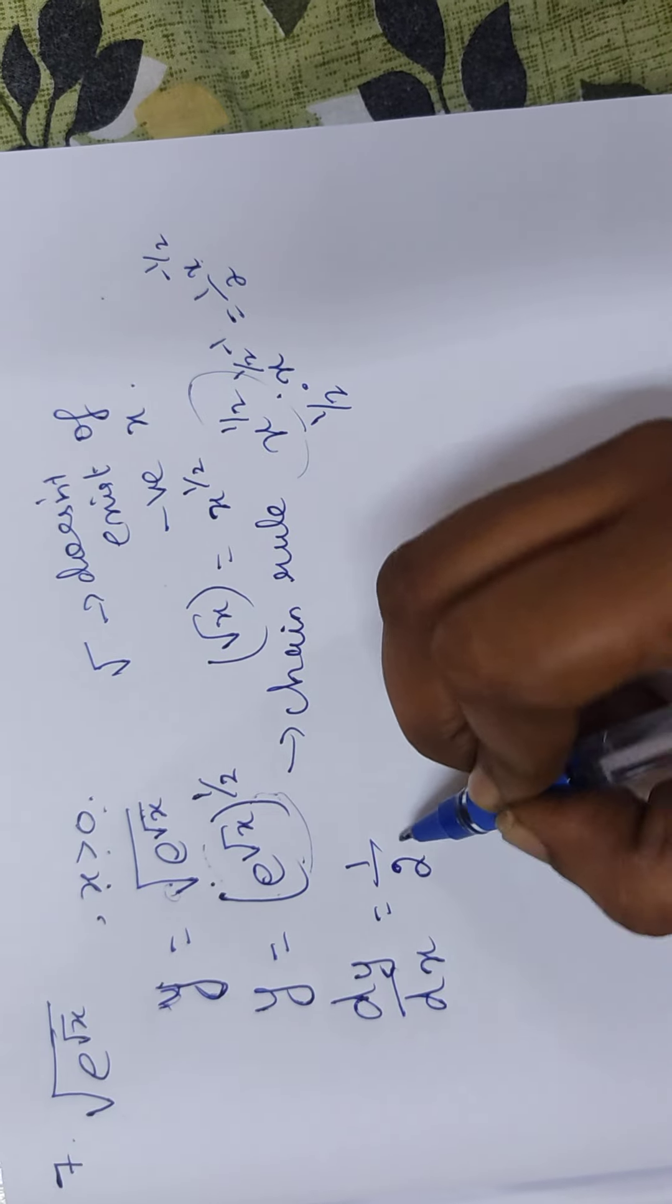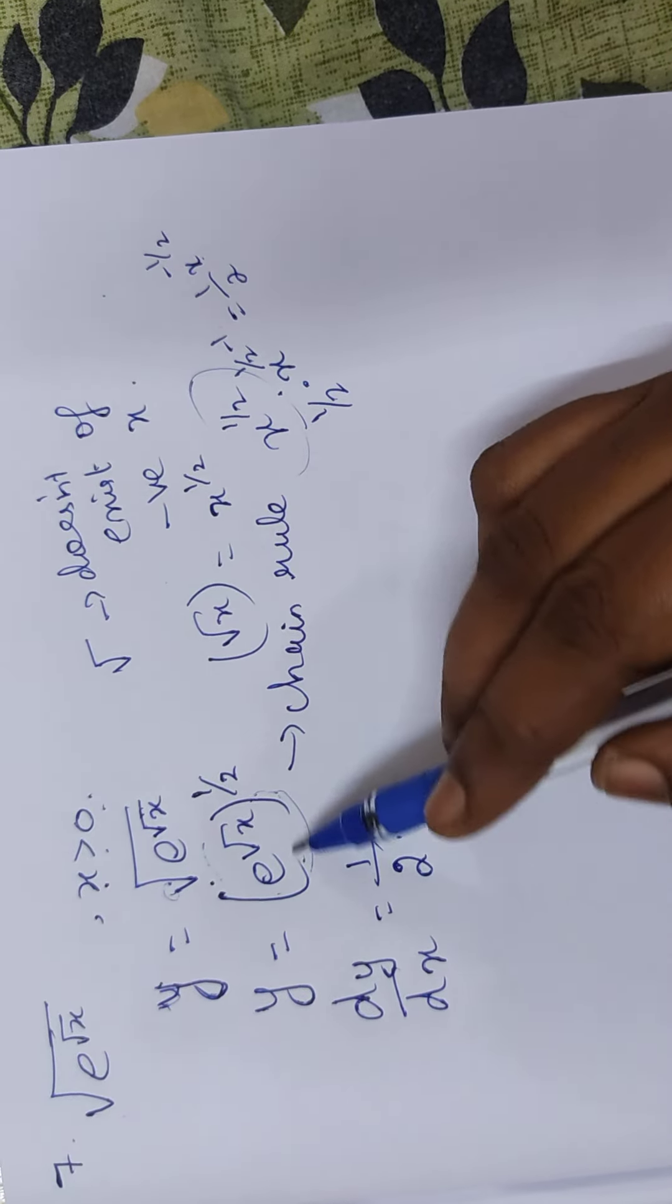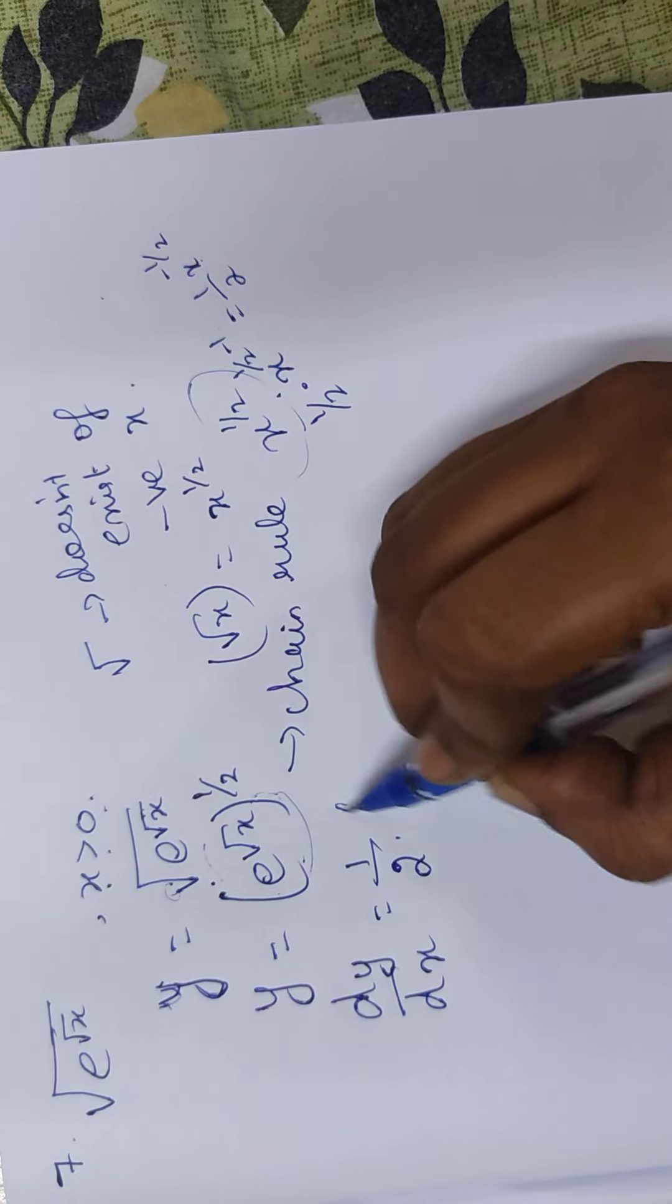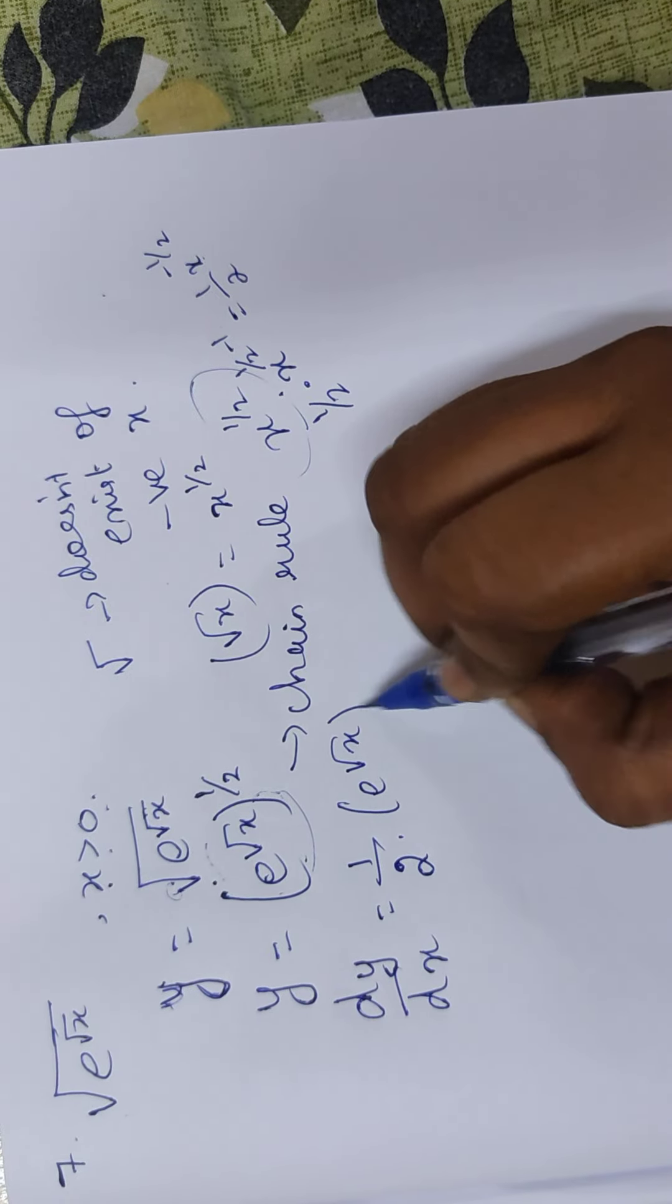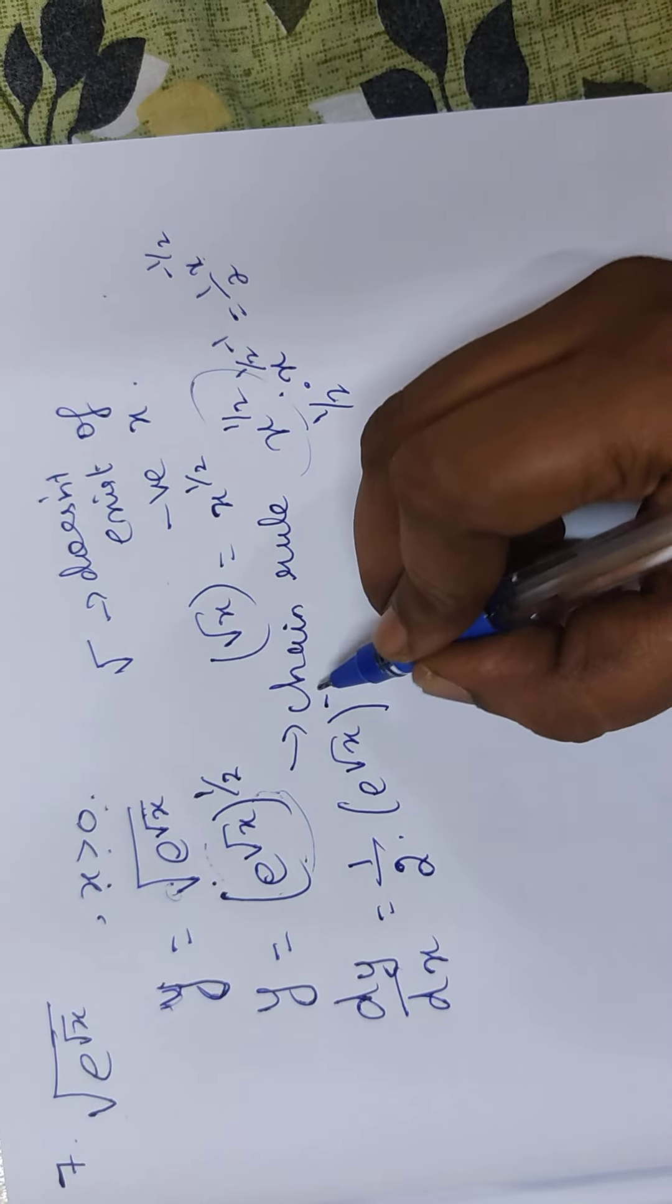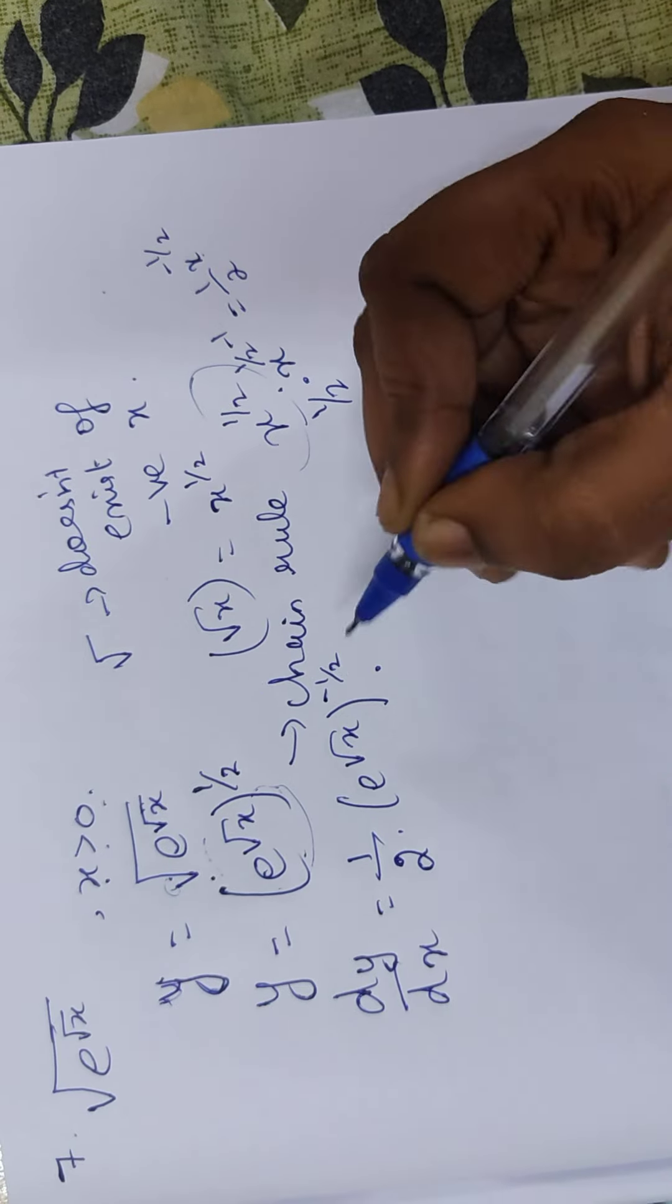1 by 2, x. x is, this is the number. e to the power root x. That's the power of n. minus 1 by 2. And chain rule.